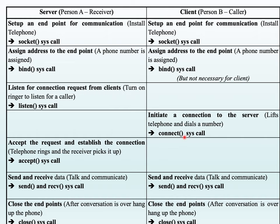The client executes the connect system call to attempt to connect to the server. The connection parameters are passed to the server, which is notified because it is listening. The server then accepts the connection — like picking up the phone — using the accept system call. Once accepted, both the server and client can use send and receive system calls for full-duplex communication. When communication is done, both can execute the close system call to close the connection.